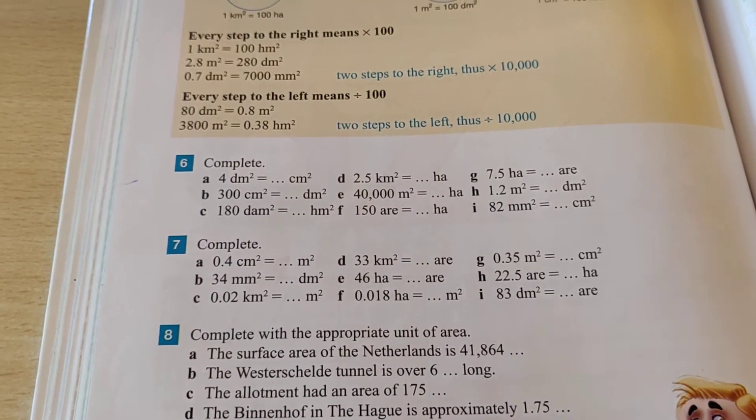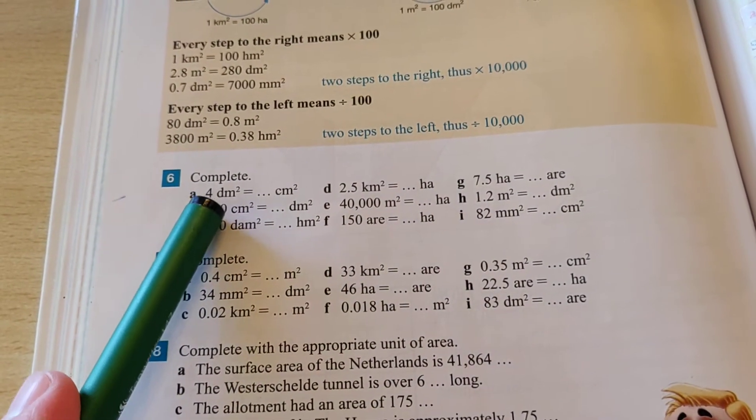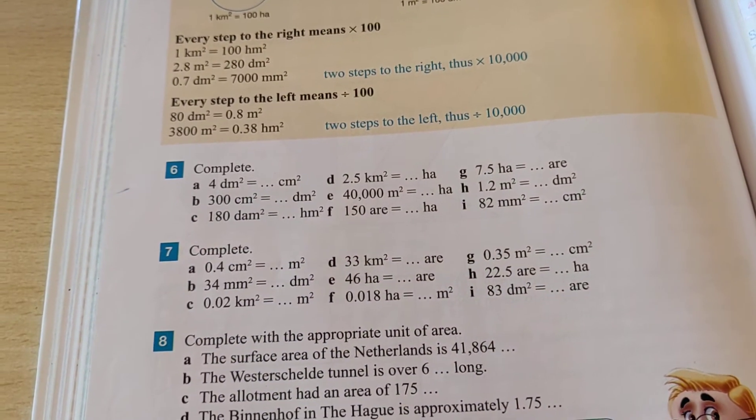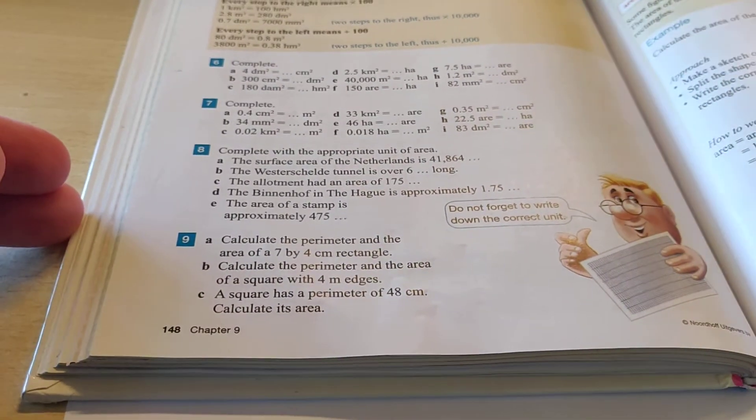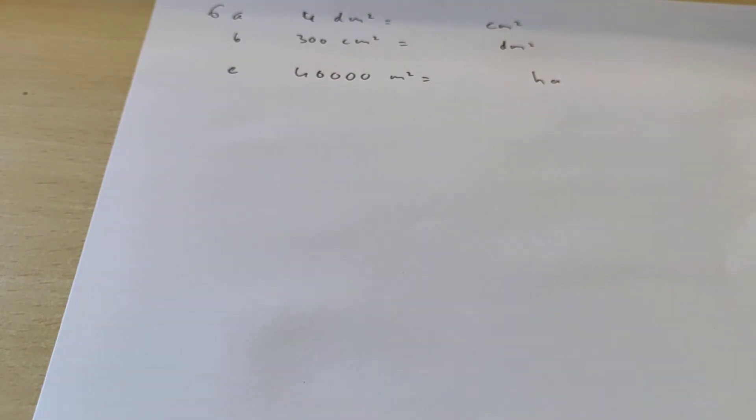Here with exercise 6, we need to translate how much 7 squared decimeters is, if you want to write it down in squared centimeters. So below the book here, I wrote it down on a piece of paper.